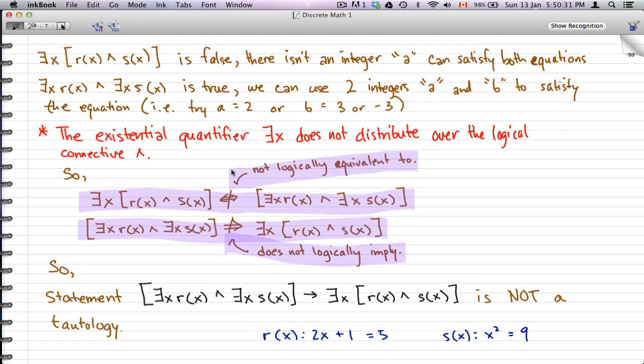The existential quantifier Ex does not distribute over the logical connective AND. So what we have here is Ex [R(x) and S(x)], which is not logically equivalent to [Ex R(x) and Ex S(x)]. Similarly, [Ex R(x) and Ex S(x)] does not logically imply Ex [R(x) and S(x)].